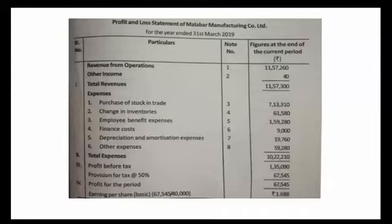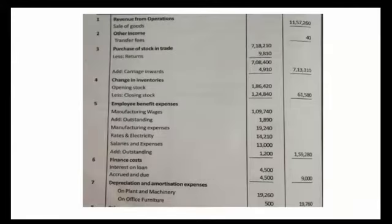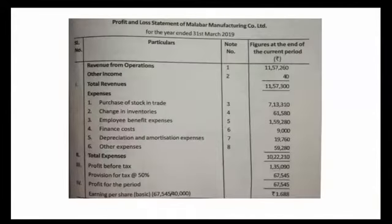Finance cost — Note No. 6. Interest on loan: total loan interest is 9,000, at 18% interest. Six months interest is due. Interest on loan paid is 4,500 and accrued and due is 4,500, giving a total of 9,000. Finance cost total is 9,000.